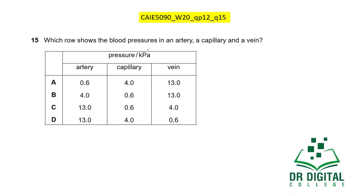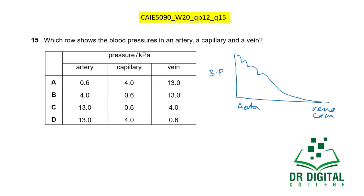In this question, which row shows blood pressures in an artery, a capillary, and a vein? Blood pressure continuously decreases from the aorta toward the vena cava — it never reaches zero but keeps decreasing. The artery should have the highest pressure, the capillary an intermediate pressure, and the vein the lowest. So 13 kPa should be in the artery, 4 kPa in the capillary, and 0.6 kPa in the vein. The answer is D.